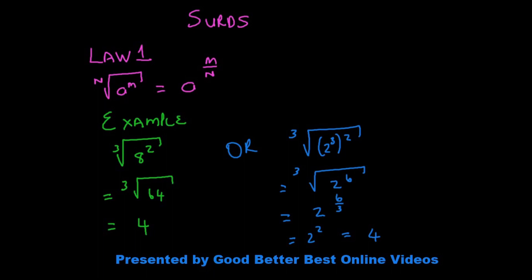Let's look at Law 1. Law 1 says that when I have a to the power m, root of n, it's the same thing as a to the power m over n.